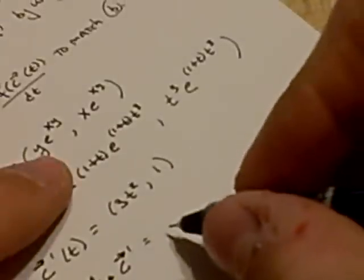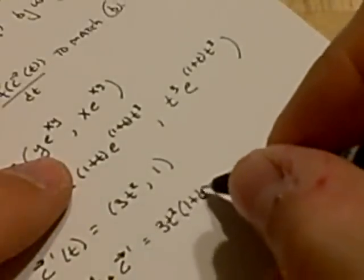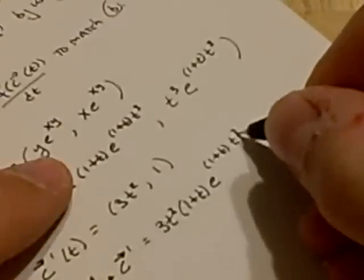The dot product is just component-wise multiplication added up. We'll have 3t squared, 1 plus t, e to the 1 plus t, t cubed,